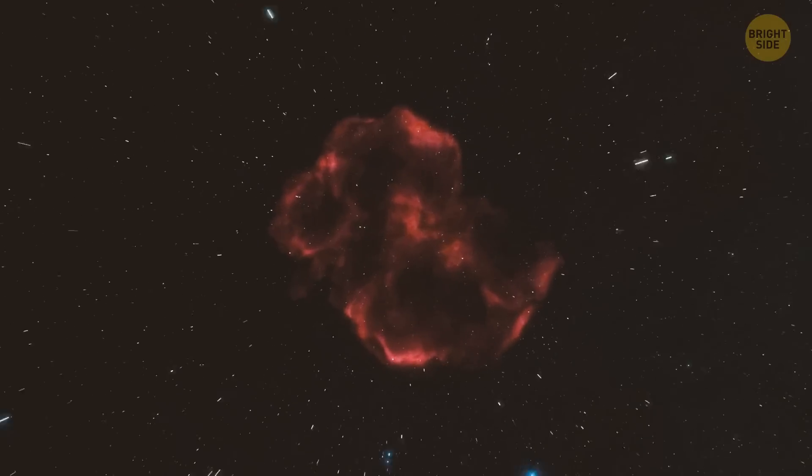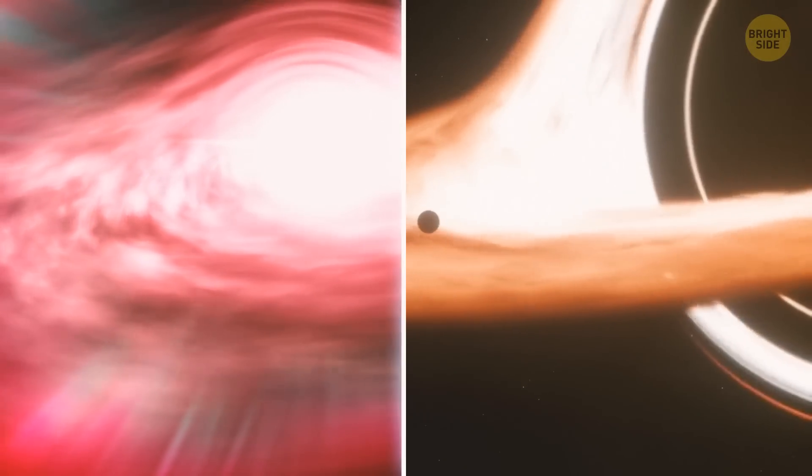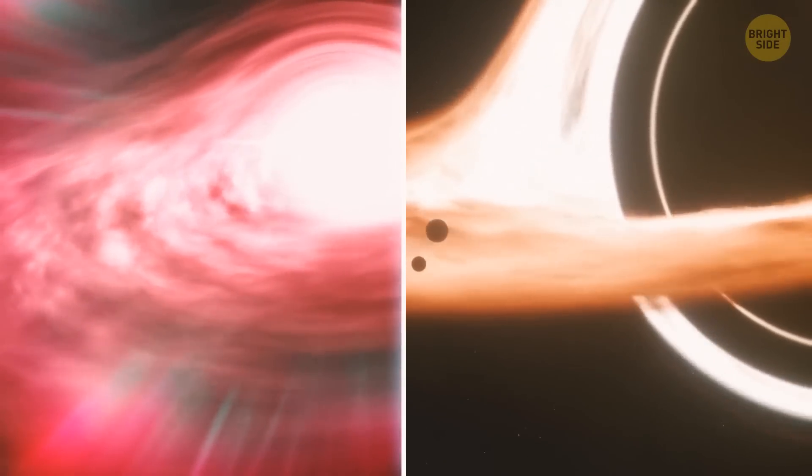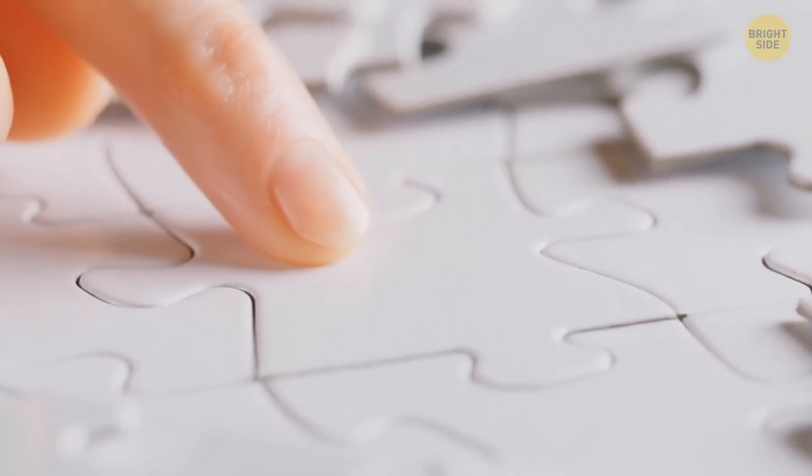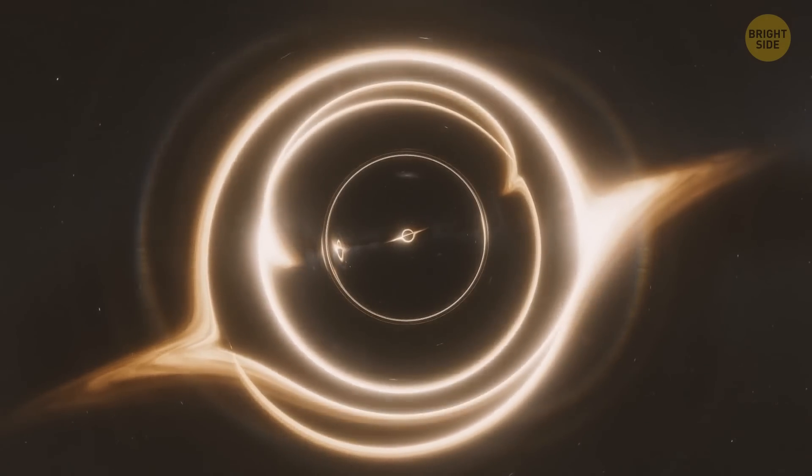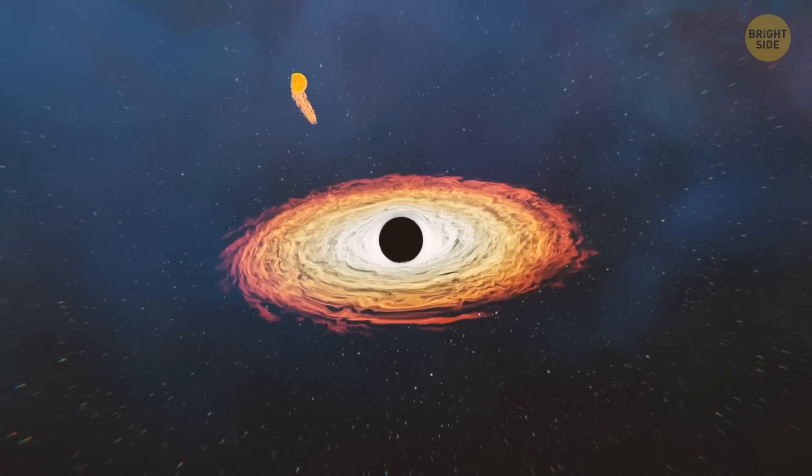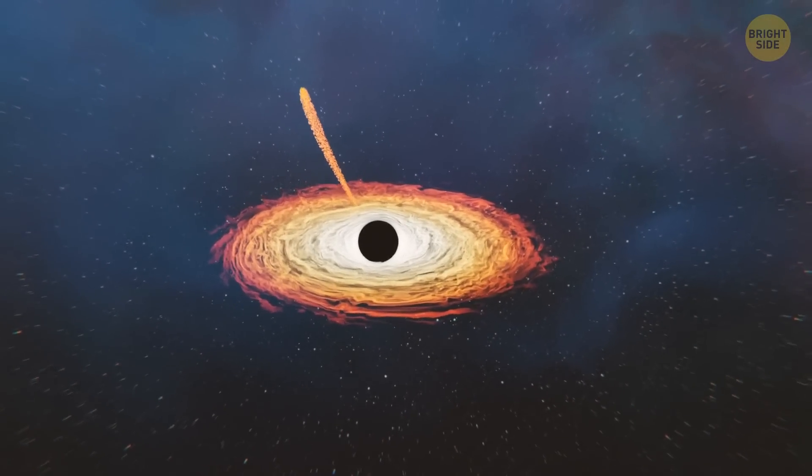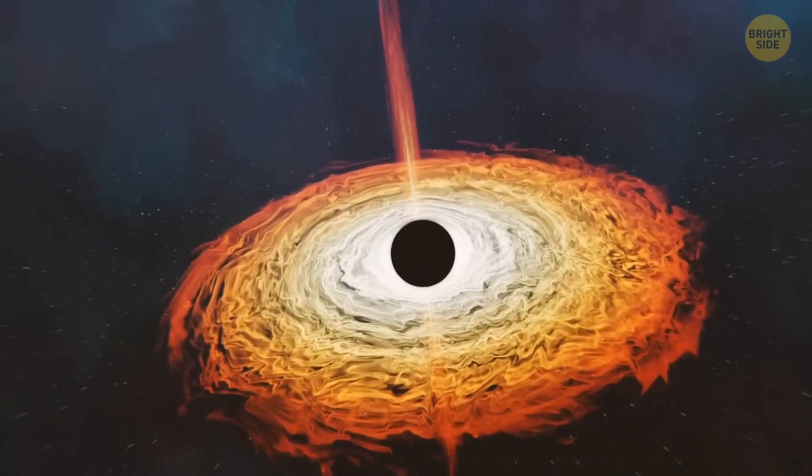Scientists assume this because they'd already observed something similar in small black holes. So, why wouldn't something like this happen to a supermassive black hole? Still, there are some missing pieces. For example, if this theory were true, we would have seen a bright flash on the x-rays, but there was none. Also, why did a black hole choke on the star only two years later? For now, scientists can only guess.